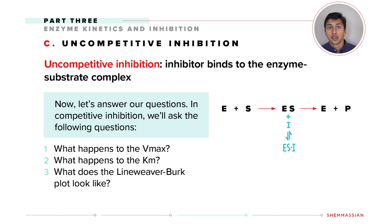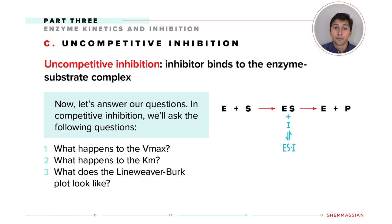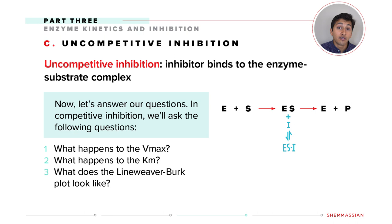Let's think of a really tall water slide. 99% of the battle is gaining the courage to make it to the top — we can think of this as E plus S. Once you make it to the top, the rest is downhill and easy. Consider ES as you when you're halfway down the water slide — you're likely going to continue to the bottom. In competitive inhibition, we didn't change ES. In uncompetitive inhibition, we are changing ES — we're completely taking away some of the water slides. So no matter what we do, we'll never get to the bottom as many times, meaning Vmax decreases.